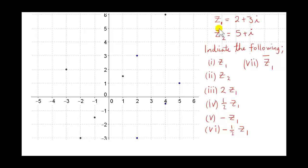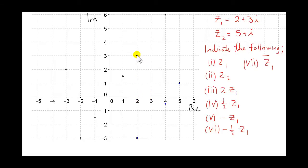We are going to plot some complex numbers in this example and look at transformations of those complex numbers. First, let's plot z1 which is 2 plus 3i. The real part is 2, the imaginary part is 3, so here is the complex number 2 plus 3i.